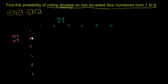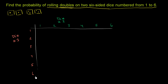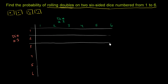Given these possible outcomes for each of the dice, we can now think of the outcomes for both dice. Let me draw a grid here just to make it a little bit neater, and then let me draw a full grid.